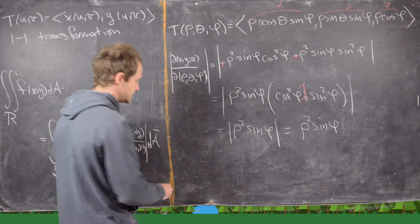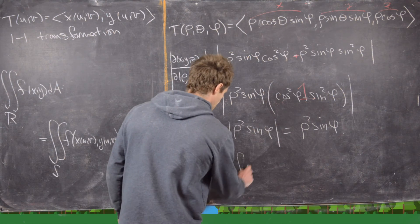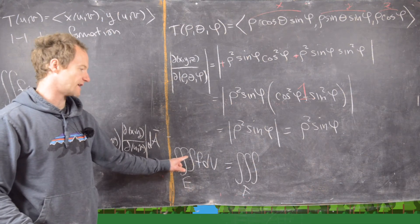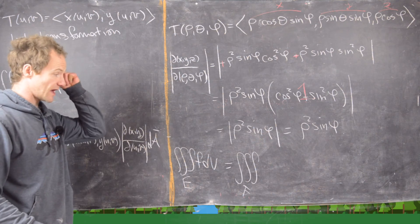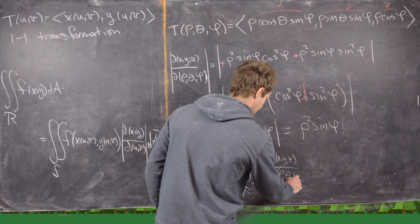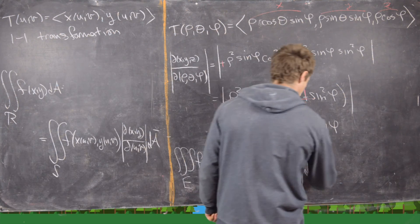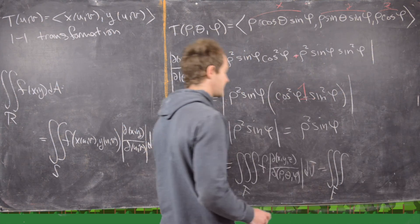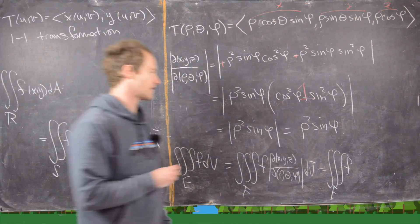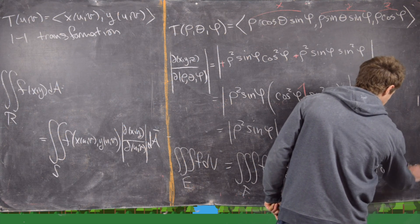Putting that all together into the change of variables formula, the triple integral over E of f dV equals the triple integral over F — now happening in the ρ, θ, φ space — of f evaluated at X, Y, Z (expressed in spherical coordinates) times ρ² sin φ, times dρ dθ dφ. This is the standard spherical coordinate integral formula, with dV-bar written as dρ dθ dφ (though the order may vary).